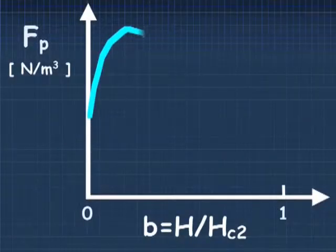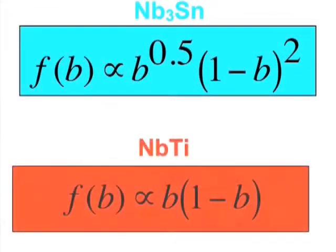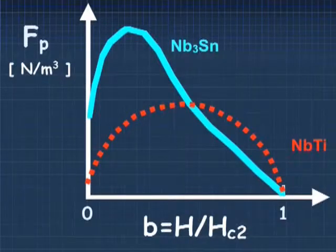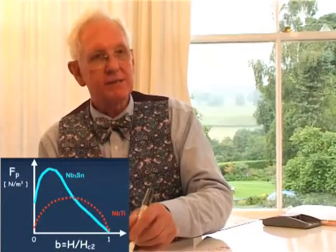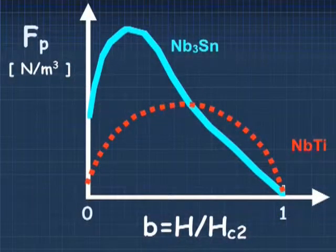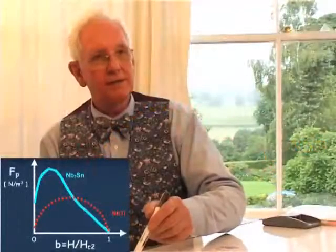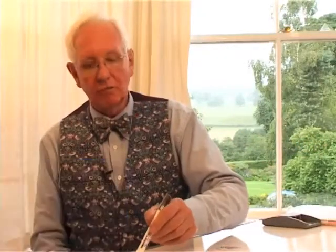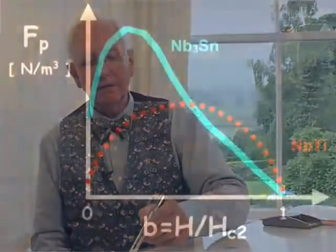The point to notice about both of these curves is the fact that the pinning strength in niobium-titanium falls quite rapidly as one approaches the upper critical field. This means that the critical current density can be quite high until very close to the upper critical field. Whereas, disappointingly, for niobium-3-tin, the pinning force and hence the critical current density falls long before we approach the upper critical field.